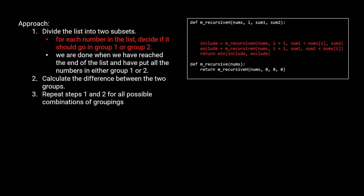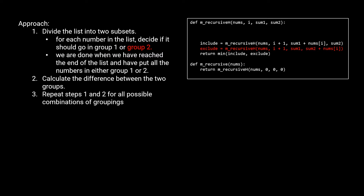Let's handle our recursive cases before the base cases. We have two choices: assign the current number into group one or group two. The first recursive call represents including the number into group one. We pass in the same nums list, i plus one for i — representing that we've made a choice and move to the next number. Since we decided to include the ith number in the first group, we update sum one by adding nums[i] to it. Sum two is left unchanged.